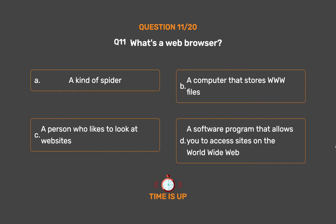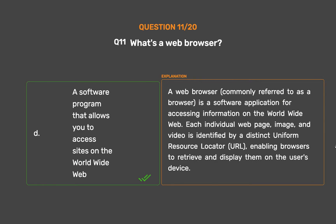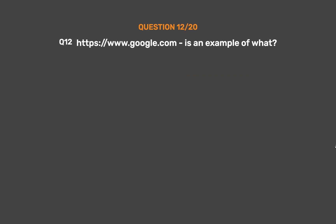The correct answer is Option D: A software program that allows you to access sites on the World Wide Web. A web browser, commonly referred to as a browser, is a software application for accessing information on the World Wide Web. Each individual web page, image, and video is identified by a distinct uniform resource locator (URL), enabling browsers to retrieve and display them on the user's device.